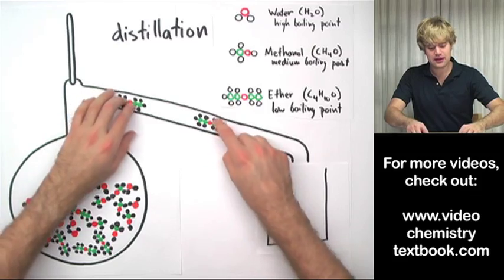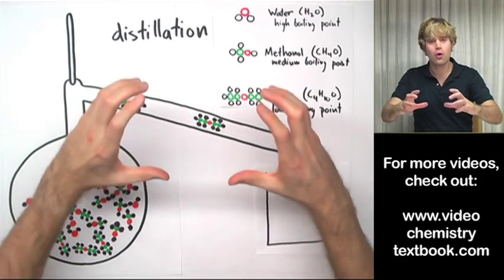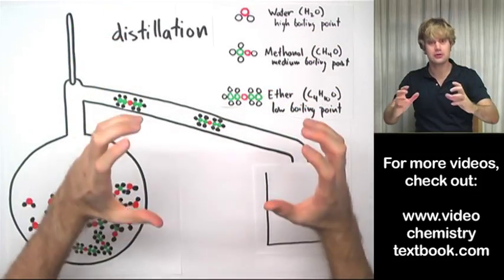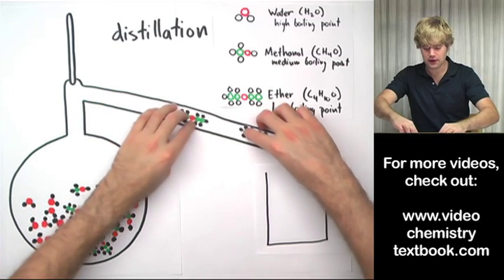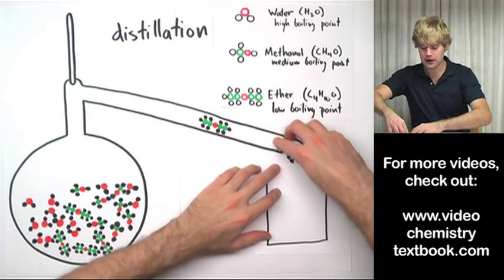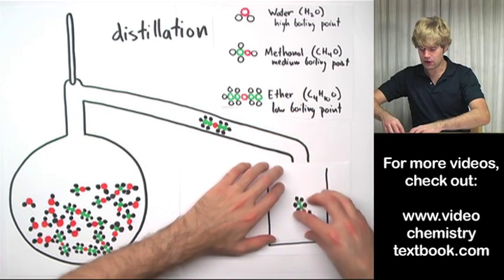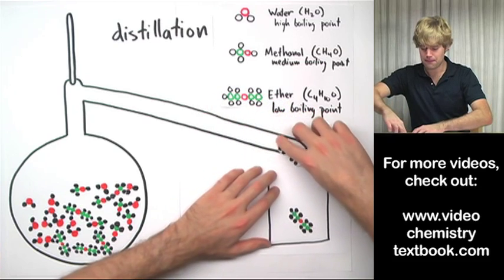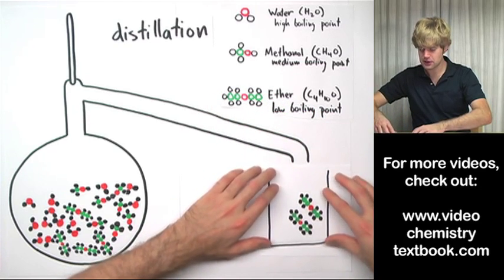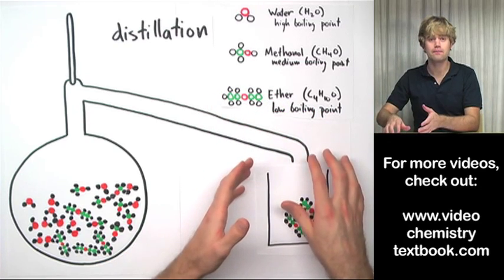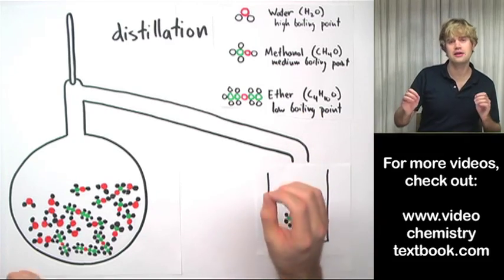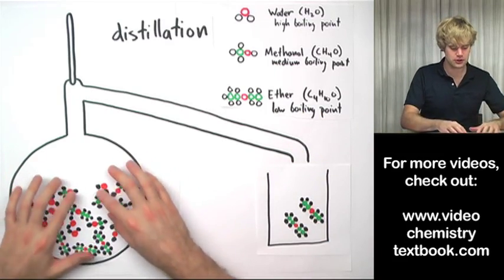And as they move down the condenser, they're going to get colder and colder until the gas ether turns back into liquid ether. And then this liquid ether is going to drip down into a beaker or glass that I have waiting right here. So that's how I'm going to get the ether out. At a low temperature, it starts to boil.